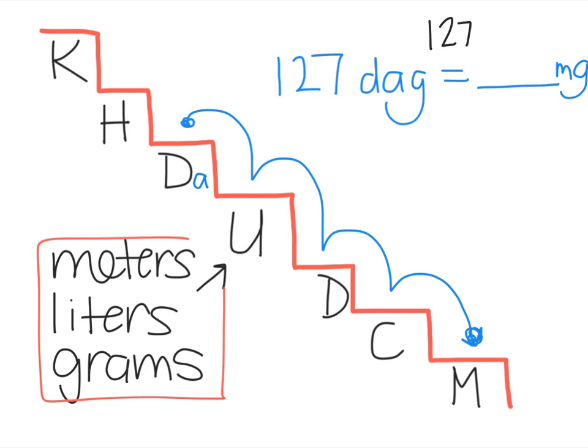So now I need to move it. But here's our invisible decimal, 1, 2, 3, 4 places to the right, and I'm going to put my commas in where they go. So the answer to 127 decagrams, it's equal to 1,270,000 milligrams. Did you get that right?